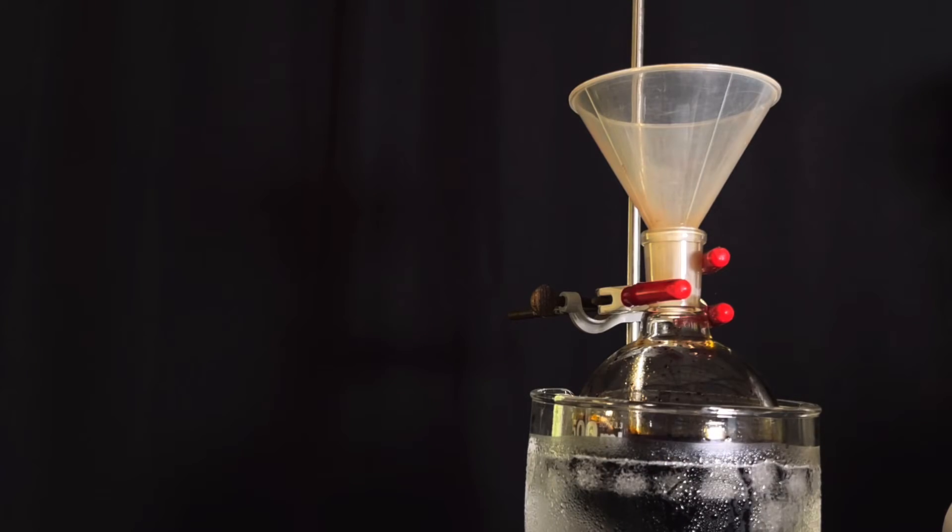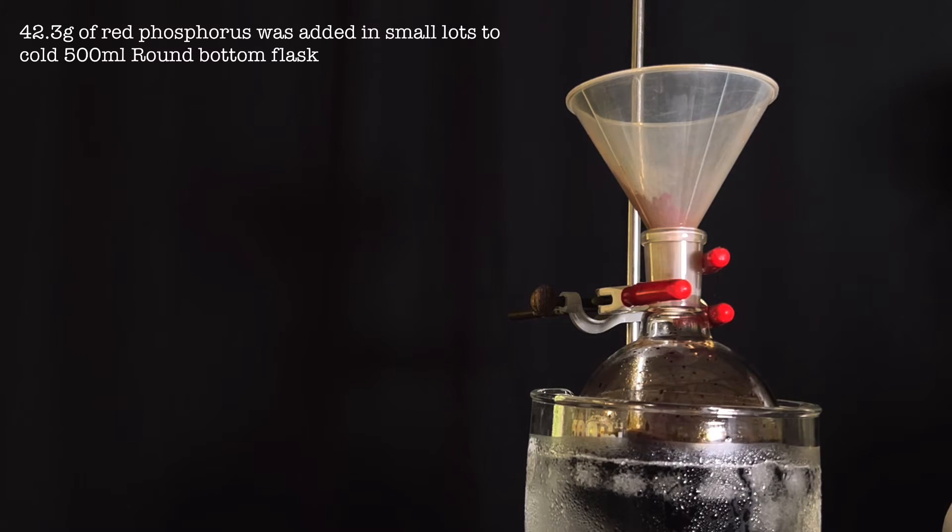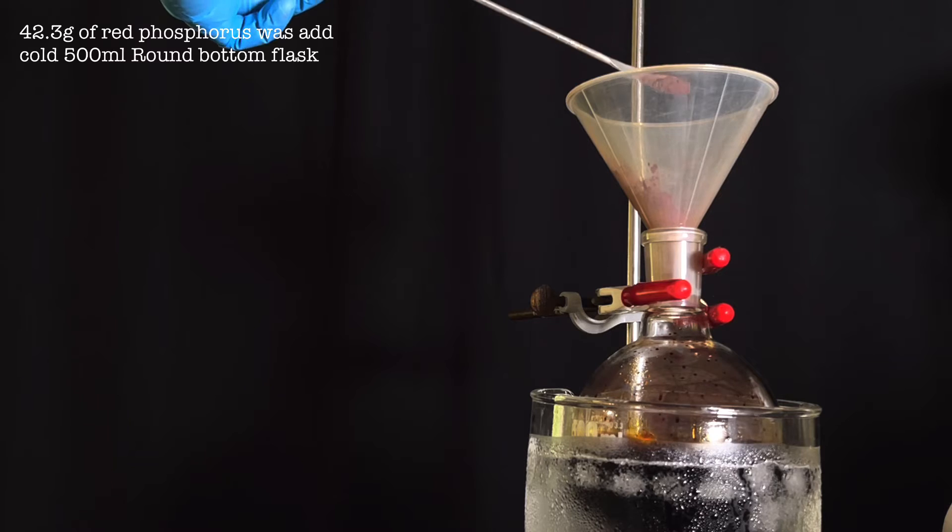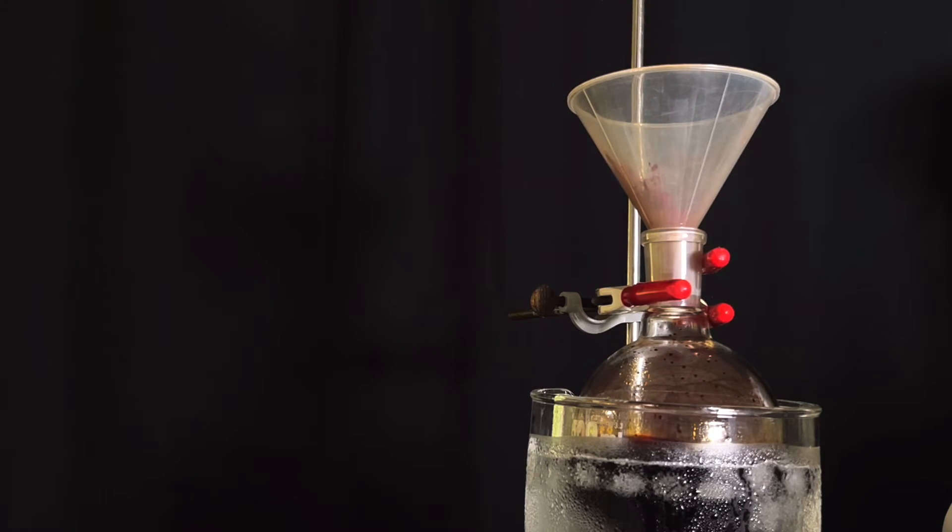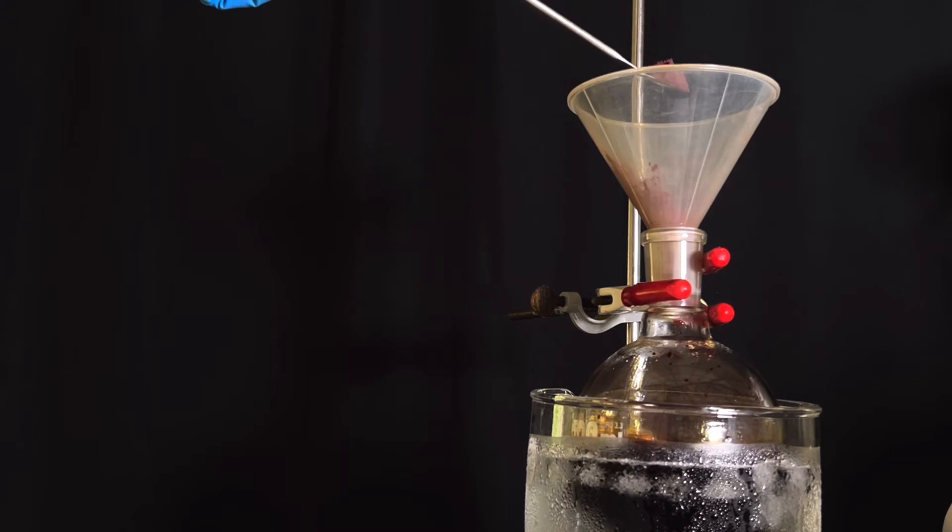Next we start adding the red phosphorus in small scoops at a time. This will immediately start the reaction and the reaction is exothermic. That is the reason we are using an ice bath. The boiling point of methyl iodide is 42 degrees C and is pretty volatile.